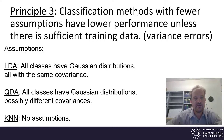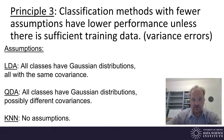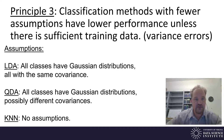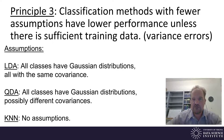Principle number three: classification methods with fewer assumptions have lower performance unless there's sufficient training data. These are called variance errors. If your data does separate with linear decision boundaries, or if the classes really are given by Gaussian distributions, then LDA and QDA will work better than KNN, although some of that can be overcome by adding more training data. With larger training data, something like KNN will be able to train better toward those linear decision boundaries. These errors are called variance errors, where our classification method is too flexible to train easily to the characteristics of the data.